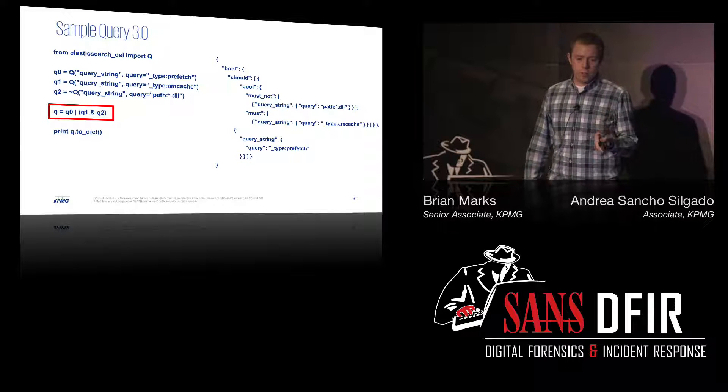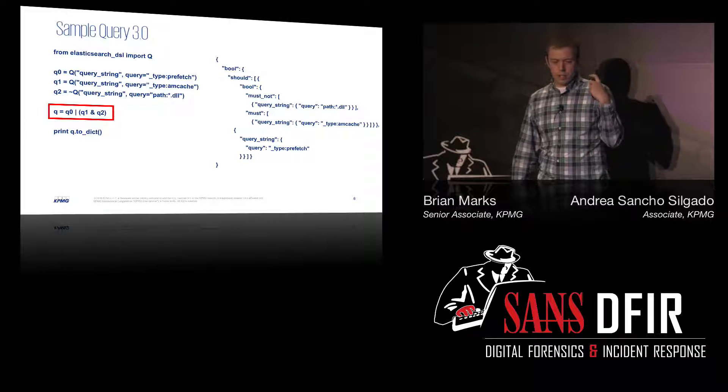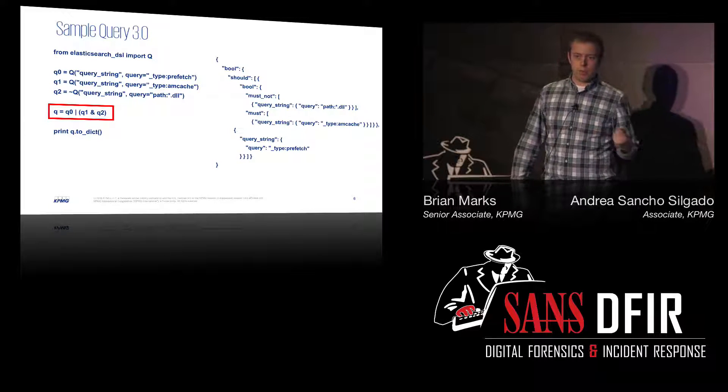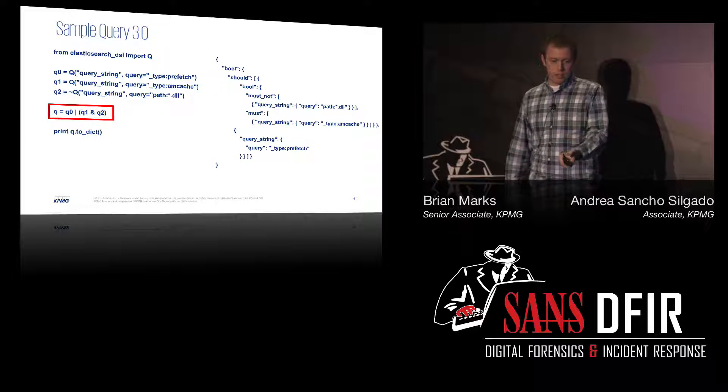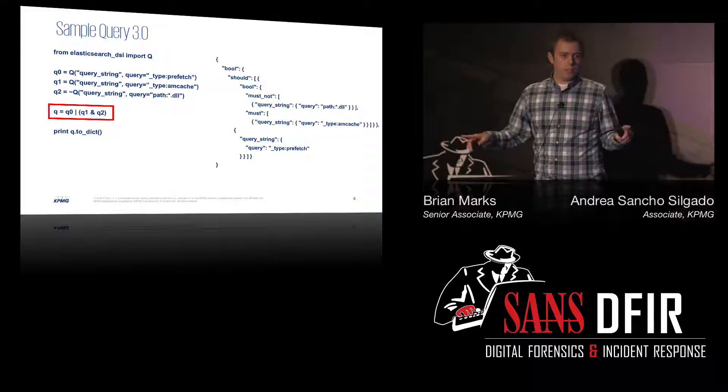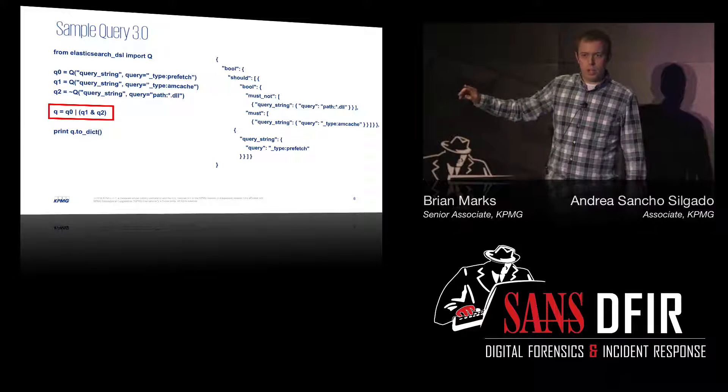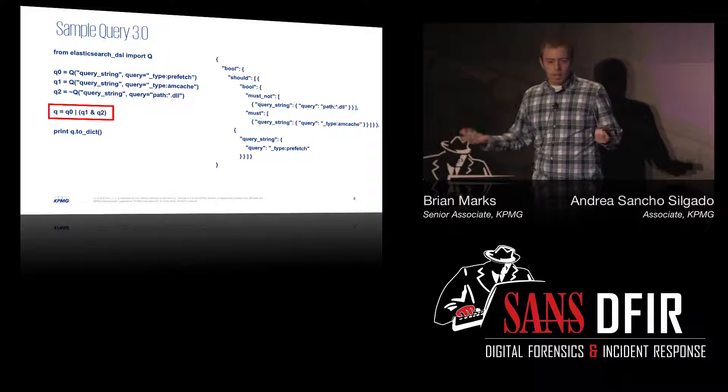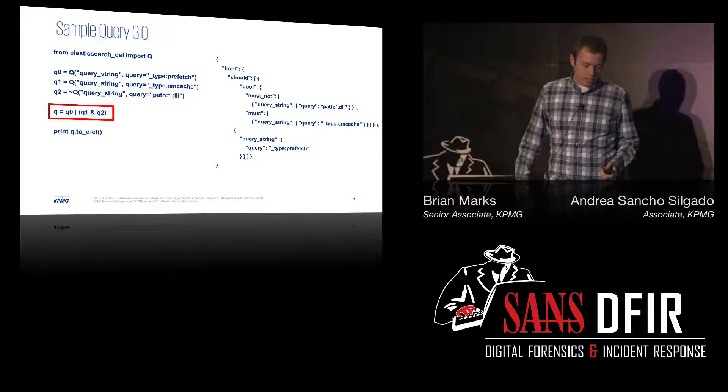Whenever I wrote my first complex query like this, it sparked something in my head from back in my reverse engineering days. I took a look at the complex query, and if there are any reverse engineers in the audience, this should sort of resemble a YARA signature — like the YARA condition at the bottom. And that leads to the next point: reverse engineers for static binary analysis have YARA signatures. For IR, we have indicators of compromise.